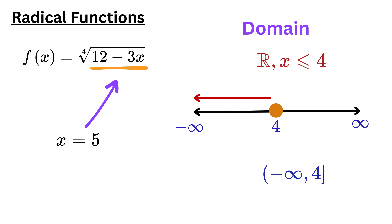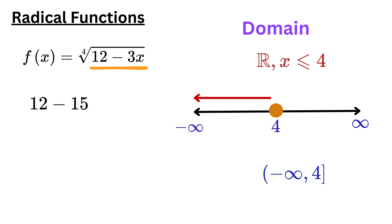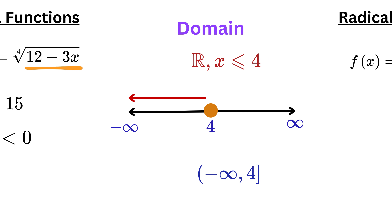Let us verify: put x equals 5 into the expression. We get 12 minus 3 times 5, which is 15. So 12 minus 15 is negative 3, which is less than 0. So this confirms the domain is correct — values of x greater than 4 produce a negative number under the radical.